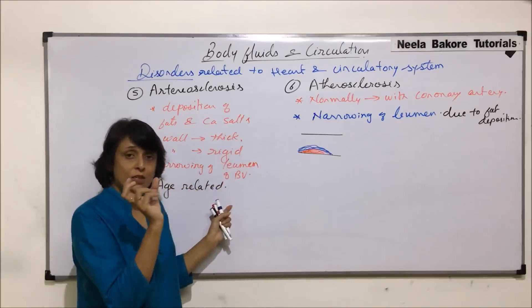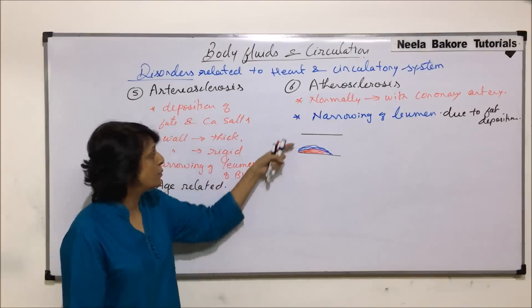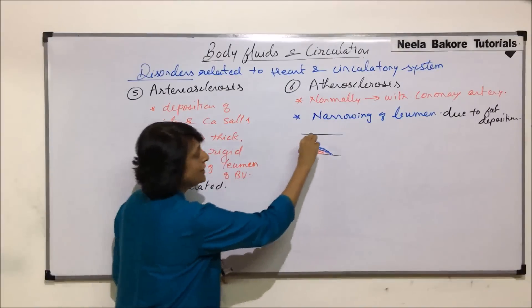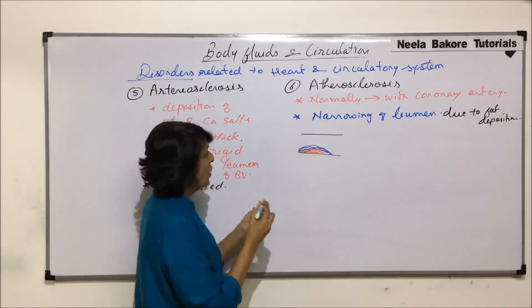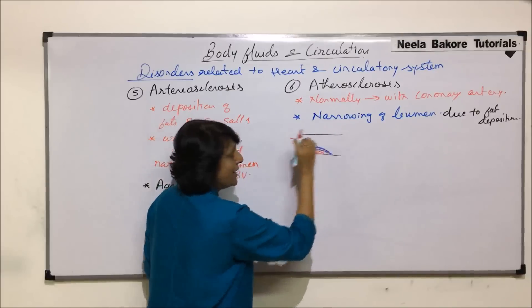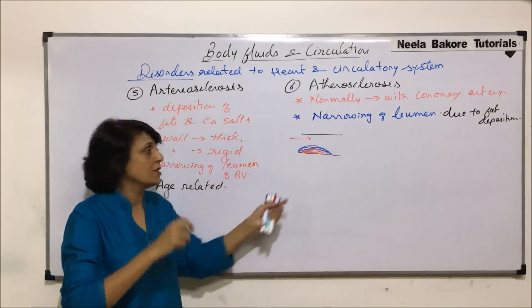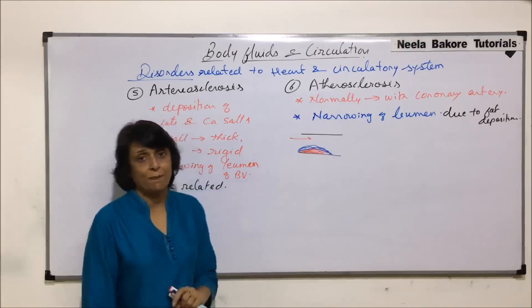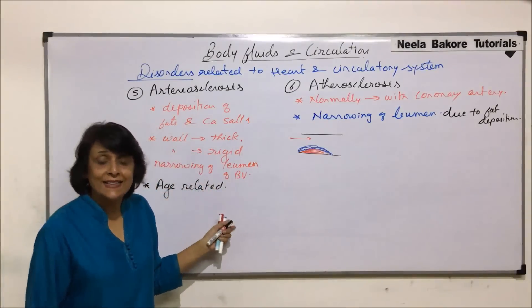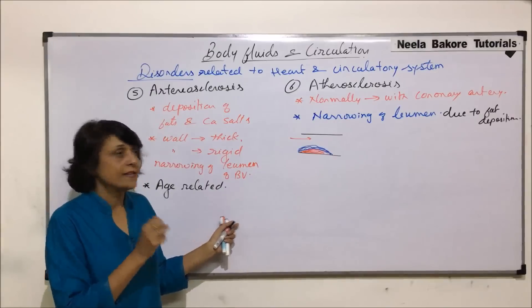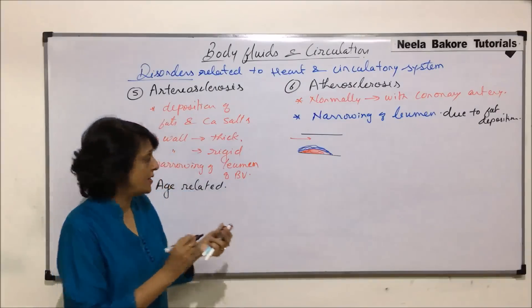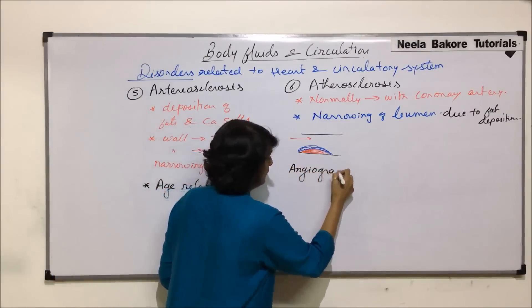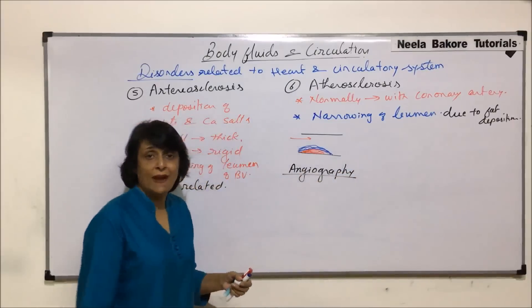Both conditions are associated with narrowing of the lumen of the blood vessel, so only a restricted space is available for blood to flow. Blood flow would be restricted or less to that particular organ or part of the heart being supplied. To detect whether there is a blockage or narrowing, the process used is known as angiography.